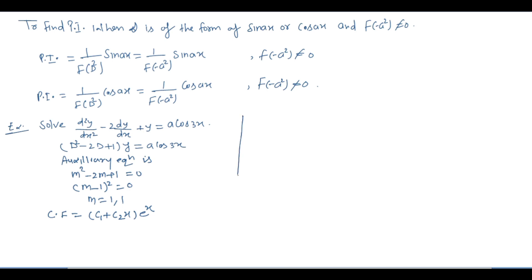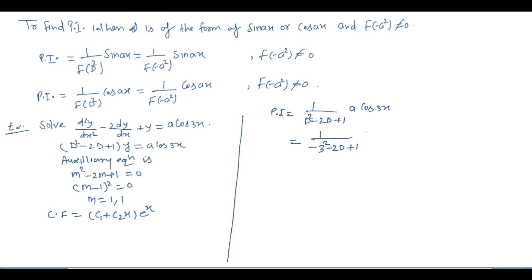अब PI निकालने के लिए: PI = 1/(D² − 2D + 1) · a·cos(3x). D² की जगह −a² = −(3²) = −9 रखेंगे। तो: 1/(−9 − 2D + 1) · a·cos(3x) = 1/(−8 − 2D) · a·cos(3x).